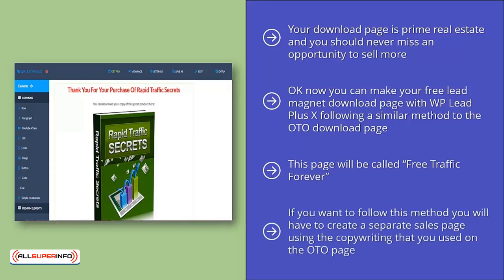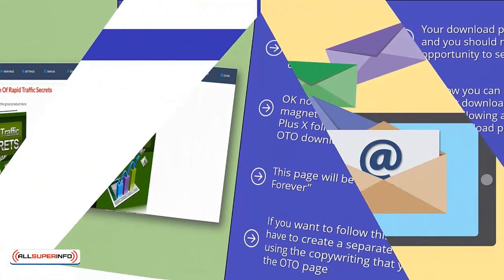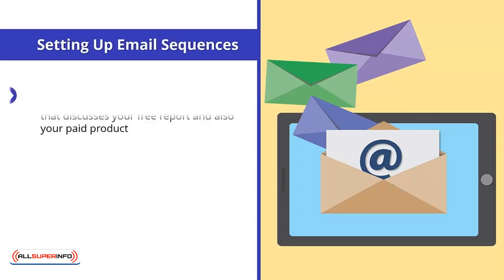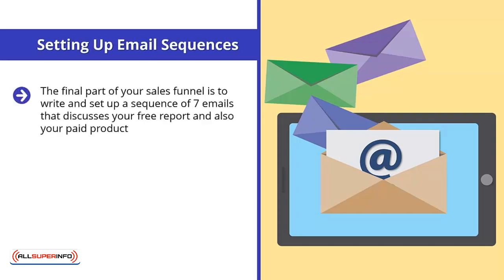If you want to follow this method, you will have to create a separate sales page using the copywriting that you used on the OTO page. Setting up email sequences. The final part of your sales funnel is to write and set up a sequence of seven emails that discusses your free report and your paid product.